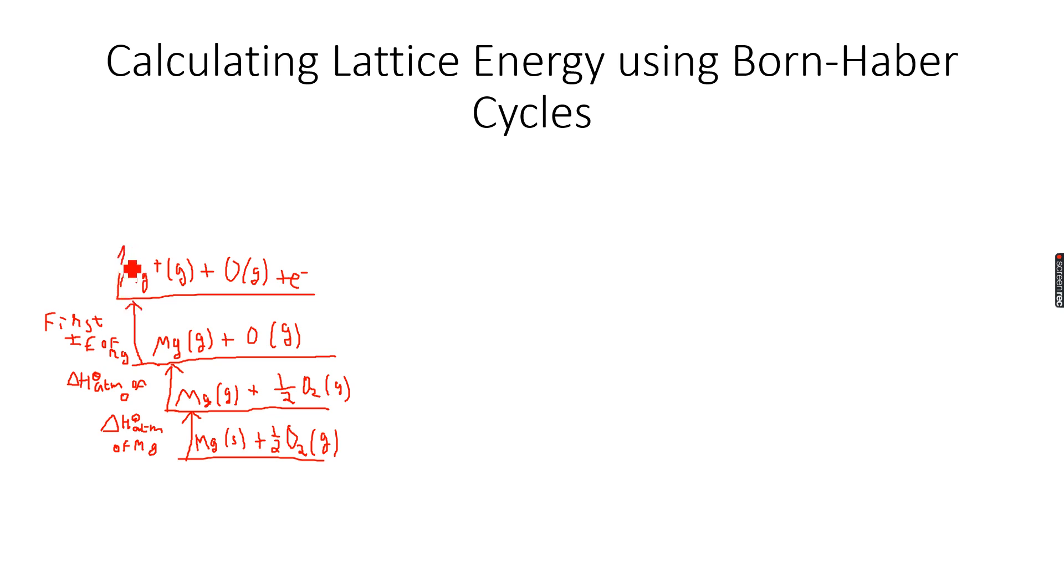Then we go up and we have to ionize it again. We have to ionize the Mg+ to make Mg2+ because we know that Mg2+ has to bond. We have the Mg2+ ion in MgO plus O gas plus two electrons because I have released one more mole of electrons now. So this is the second ionization of magnesium.